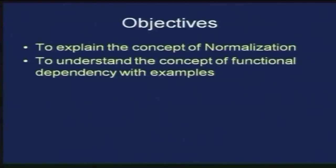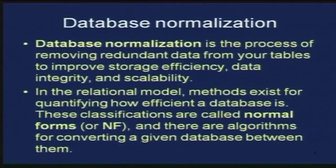Welcome to the UGC Lecture Series. In this lecture, we are going to talk about normalization and functional dependency, which are important concepts in the design of the relational database. The objective is to first explain the concept of normalization and then talk about functional dependency with examples. Normalization is the process of removing redundant data from your tables or relations to improve storage efficiency, data integrity, as well as scalability.